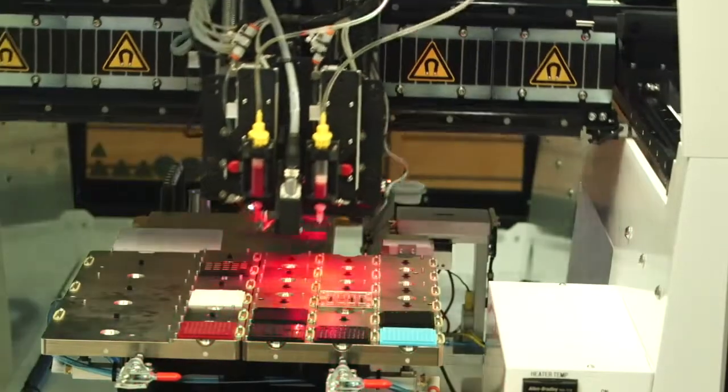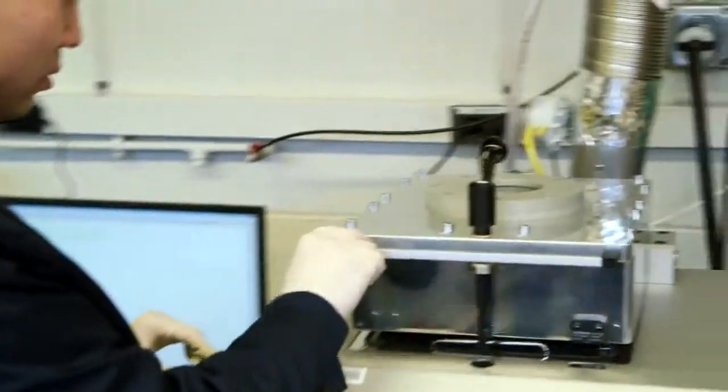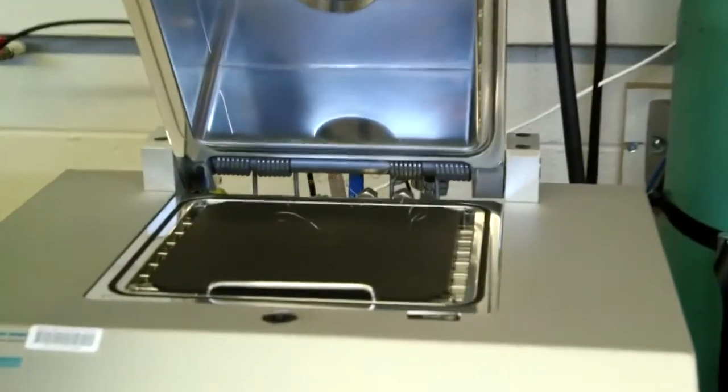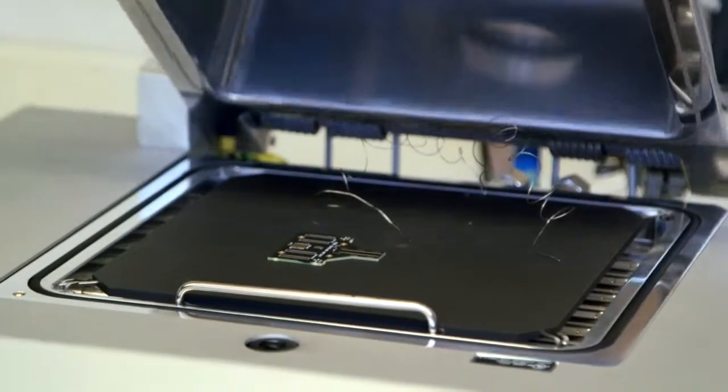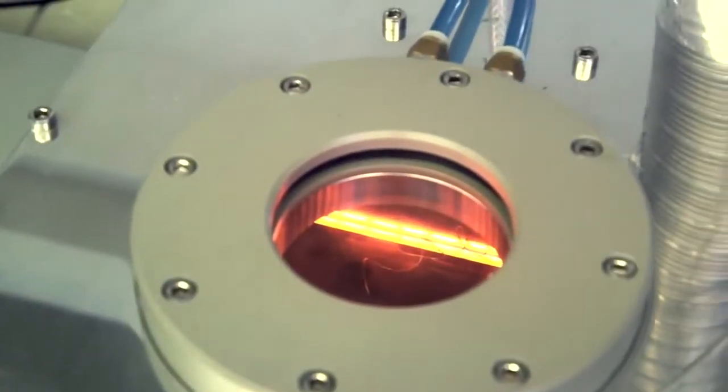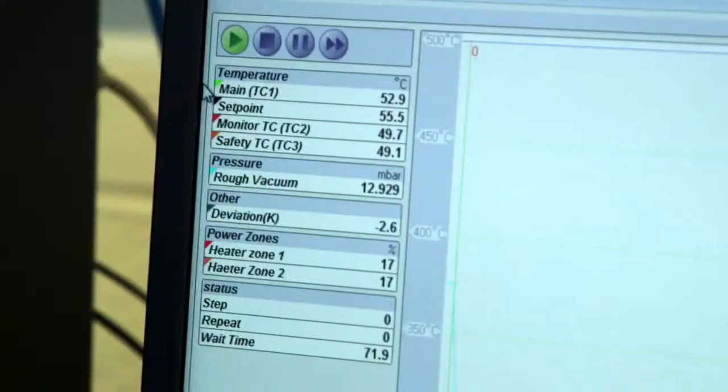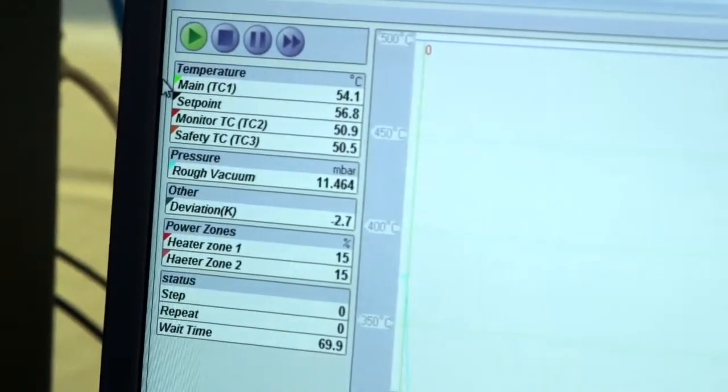Curing the epoxy can be done in this machine, or we use a vacuum reflow oven, which can heat up to about 400 degrees Celsius. The thermal cycles required for curing will vary based on the kind of epoxy and the device you're working with.